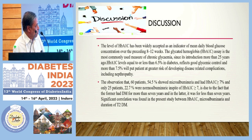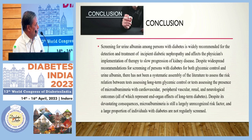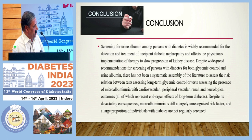Glycated hemoglobin is the most commonly used measure for diagnosing chronic hyperglycemia. Microalbuminuria was present in 54% of patients when glycated hemoglobin exceeded 7%, and much less when below 7%. Screening for urine albumin in persons with diabetes is widely recommended for detection and treatment of diabetic nephropathy and helps physicians implement therapy to slow kidney disease progression. The literature addresses the risk relationship between glycemic control tests and microalbuminuria with cardiovascular, peripheral vascular, and neurological outcomes.